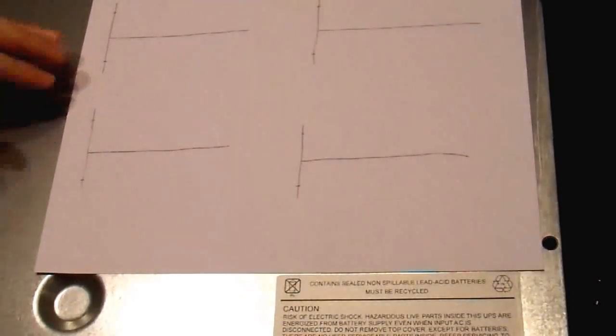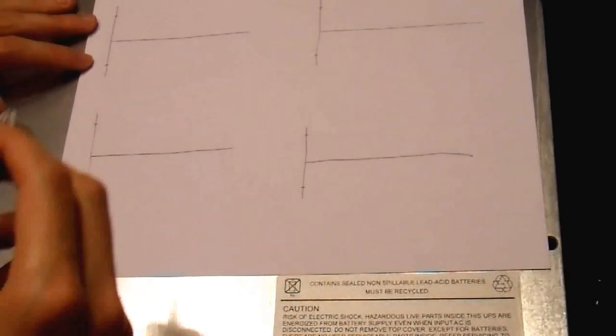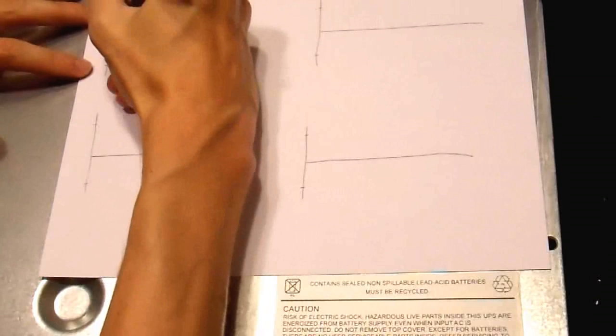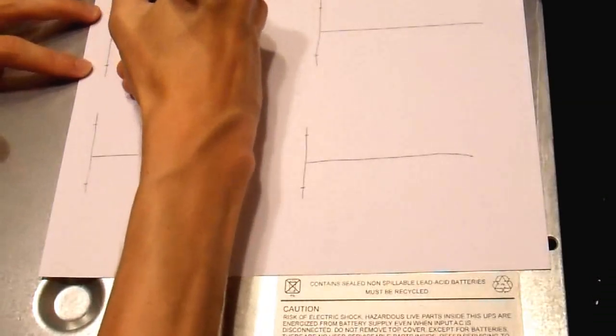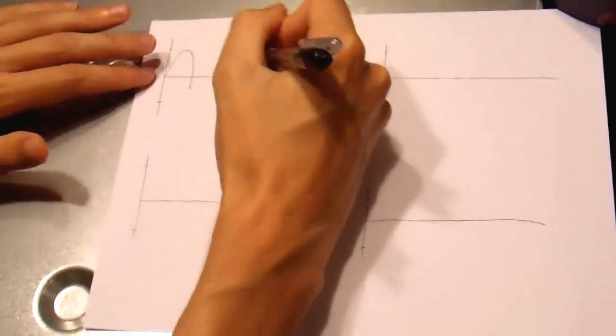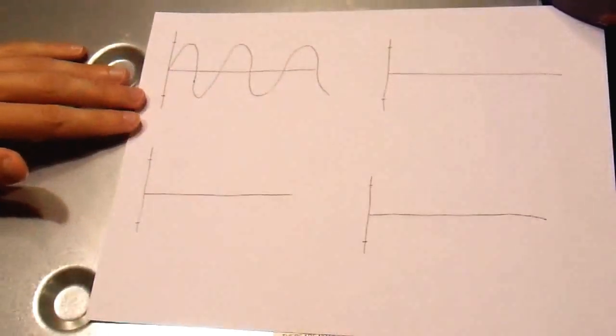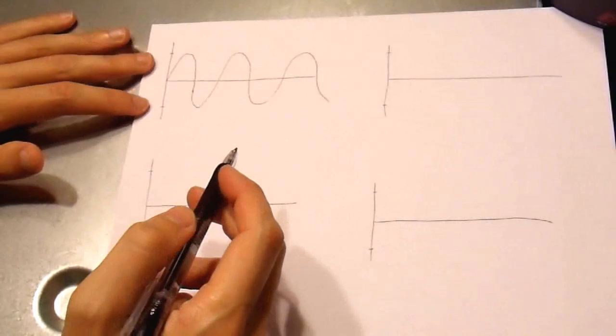First of all, AC power out of your wall socket, as most people probably know, is a sine wave or cosine wave or whatever you want to call it. But in general, a sine wave output, like this. It's 120 volts here in North America.